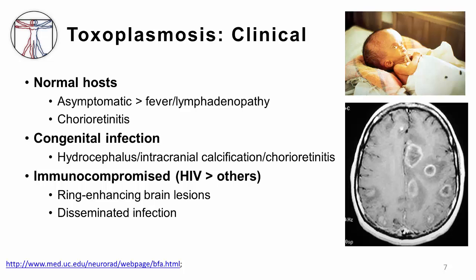Normal hosts can also develop ocular infection — chorioretinitis — something to think about in patients with that disease. Congenital infection is an important cause of disease, and patients can present with hydrocephalus because toxoplasmosis has a predilection for the central nervous system. As you can see in this image, the patient clearly has hydrocephalus with an enlarged brain. You can also see intracranial calcifications in neonates and chorioretinitis.